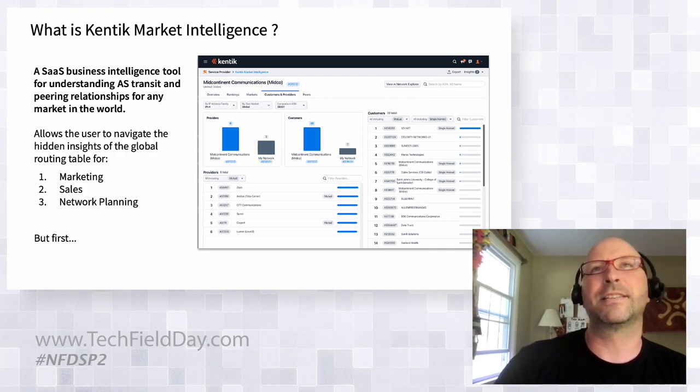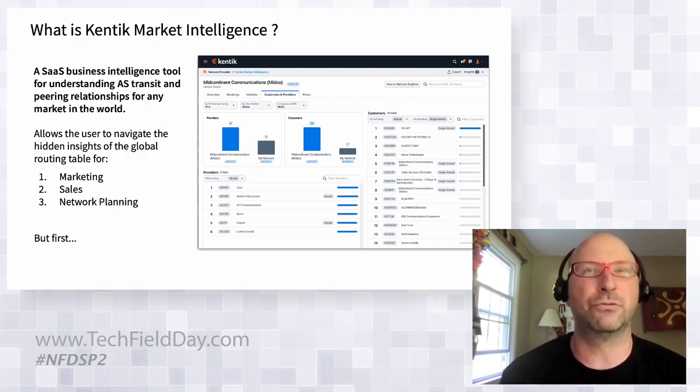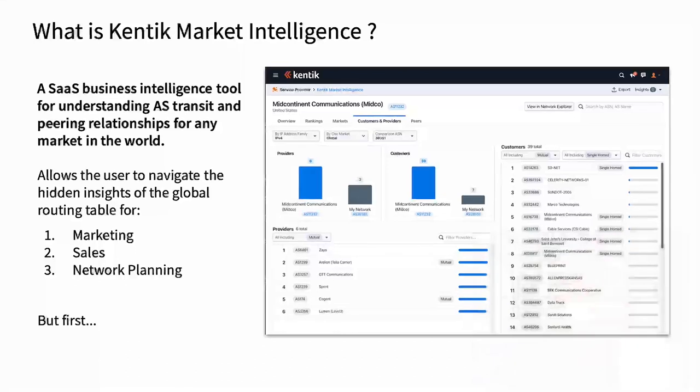So KMI — what is it? It is a SaaS business intelligence tool for understanding AS transit and peering relationships for any market in the world. I submit to you there are a lot of hidden insights in the global routing table that can be used for a bunch of different business functions. We feel like we've got use cases for marketing, sales, and then network planning, network architecture, and peering coordinator roles.